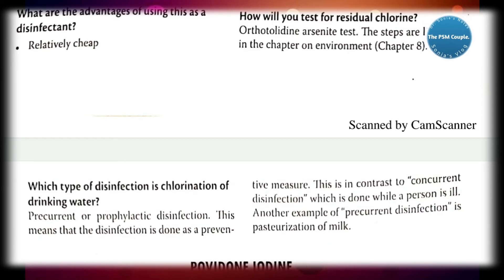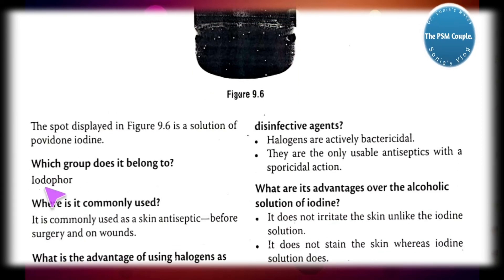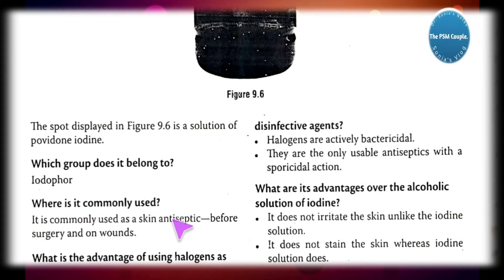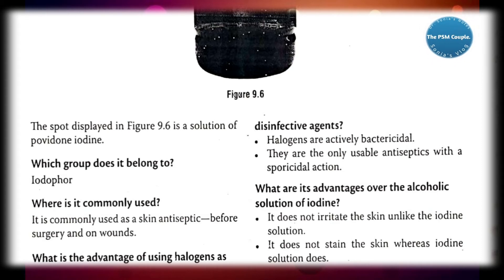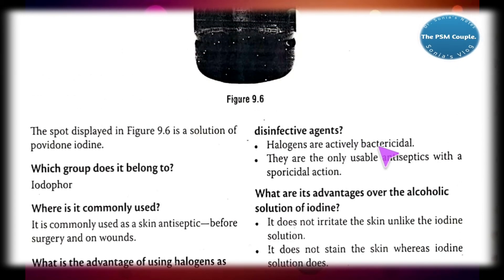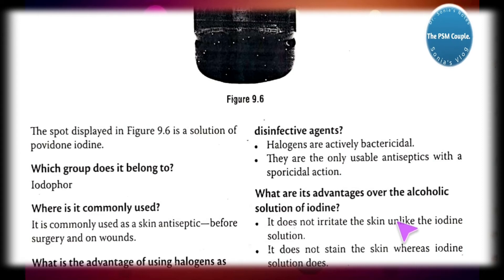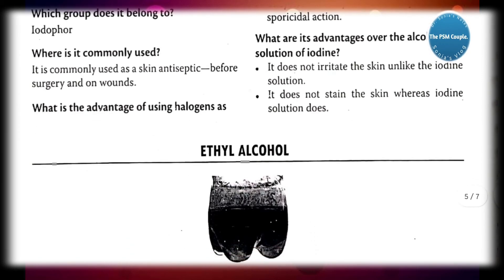Another example of precautionary disinfection is pasteurization of milk. Next is povidone iodine — it belongs to the iodine group. It is commonly used as a skin antiseptic, applied before surgery or on wounds. Advantages of using halogens as disinfectant agents: halogens are actively bactericidal and are the only usable antiseptics with a sporicidal action. Advantages over alcoholic iodine solution: it does not irritate the skin and does not stain the skin, unlike iodine solution.